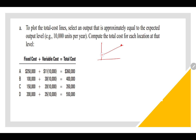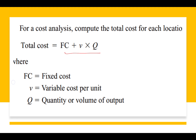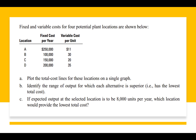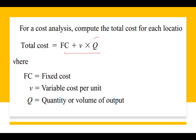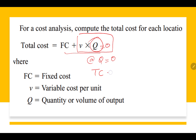In the question, fixed cost and variable cost are given, but quantity is not given. So what we will do is assume that if quantity is 0, what is going to be the total cost? If quantity is 0, then the variable cost part is 0, and the total cost is going to be equal to fixed cost.